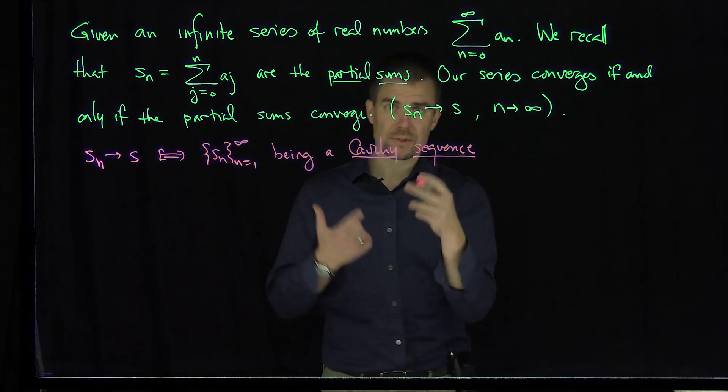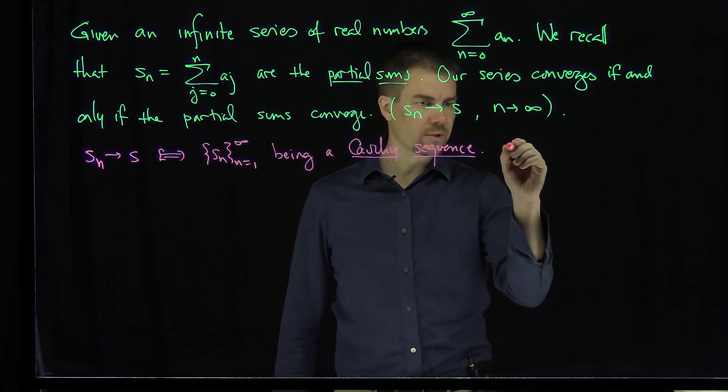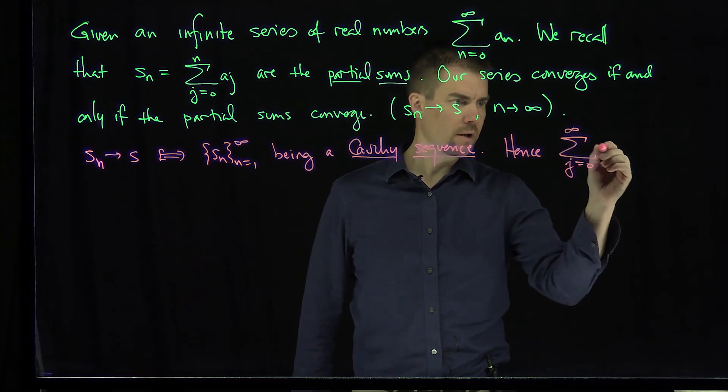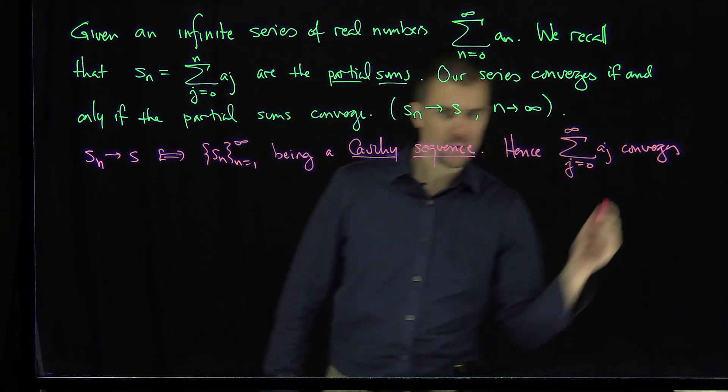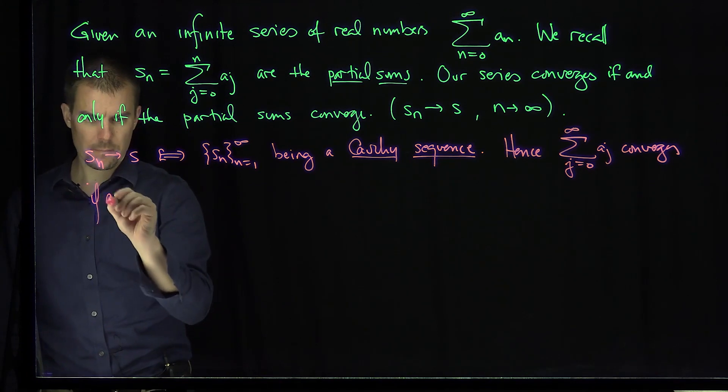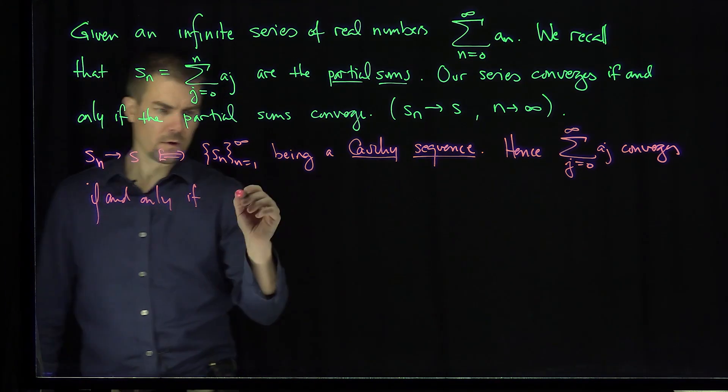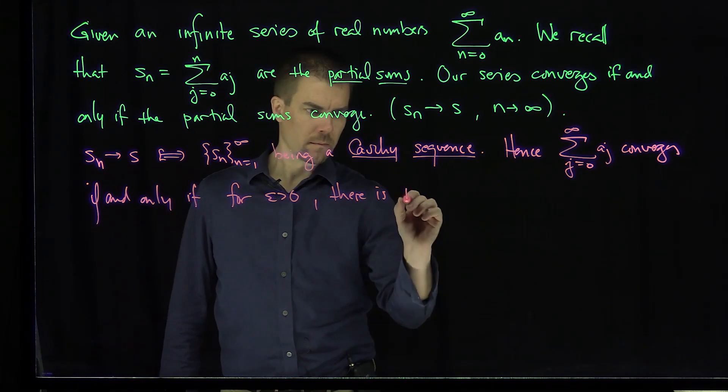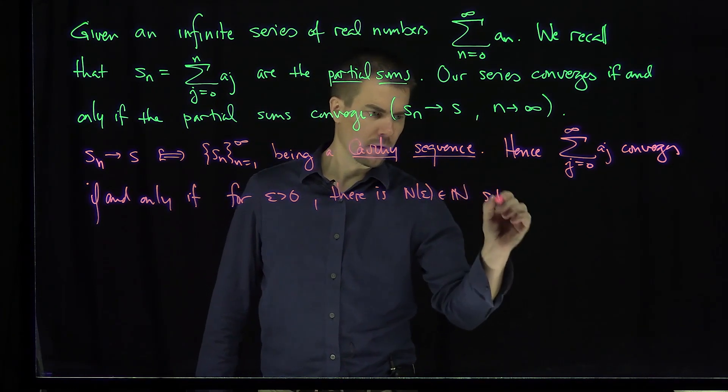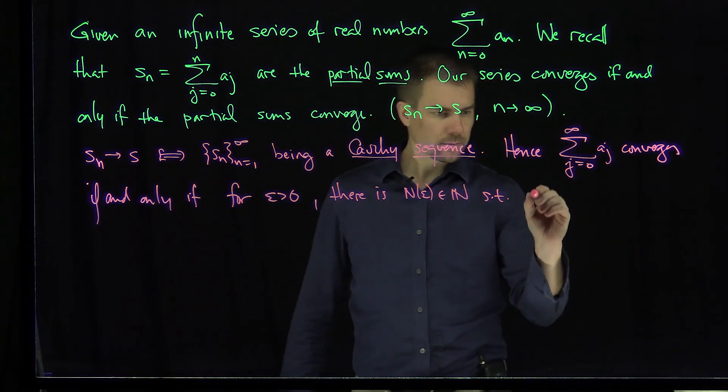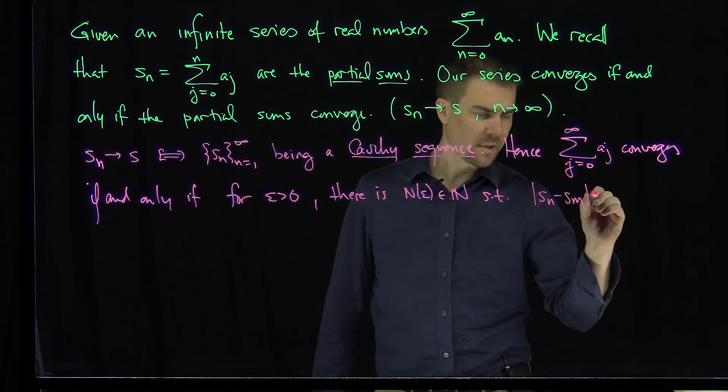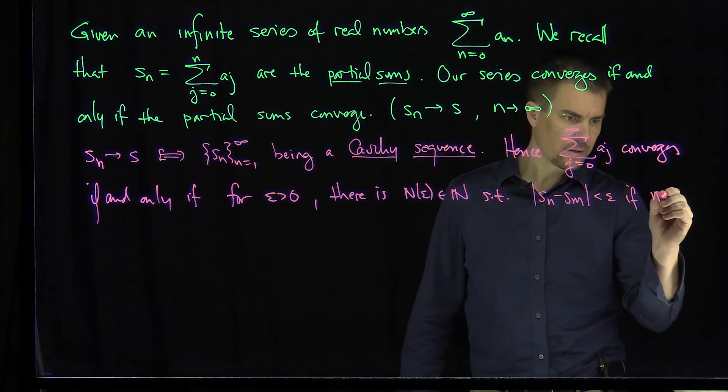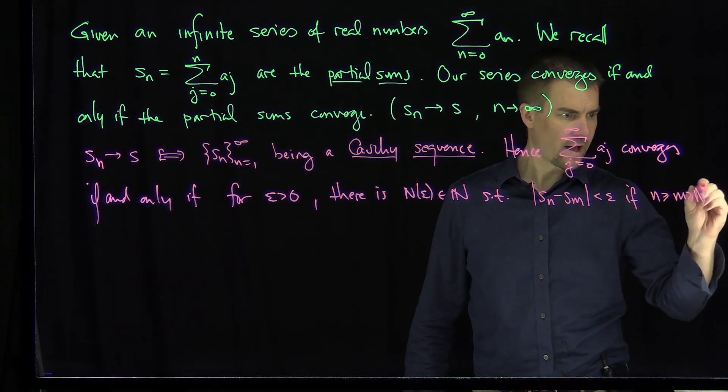And this means, let's recast what this means in terms of the Cauchy criterion. Therefore, the sum j goes from 0 to infinity of a_j converges if and only if for every epsilon greater than 0, there is an N in the natural numbers such that |s_n - s_m| is less than epsilon if m is less than or equal to n in N_epsilon.